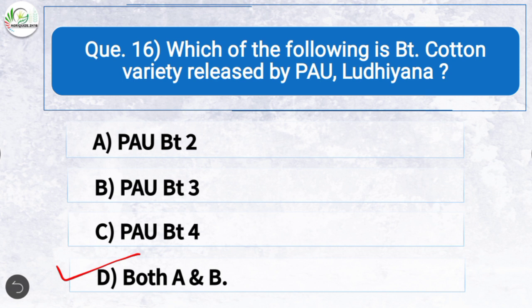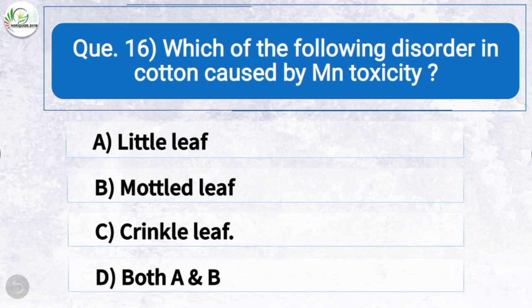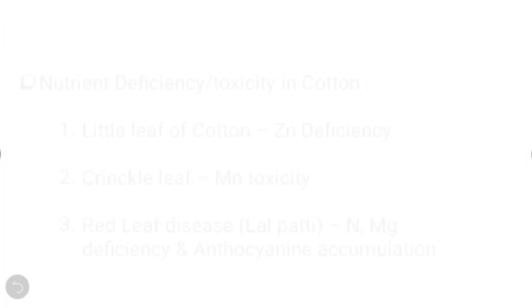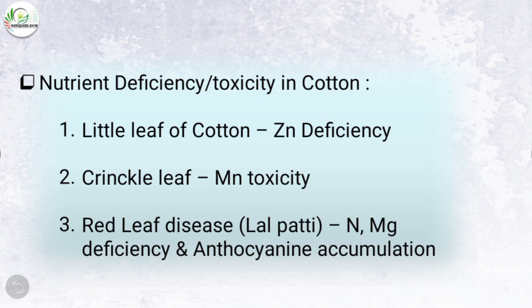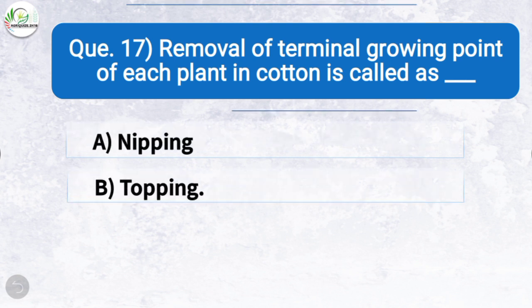Question seventeen (nutrient part): Which disorder in cotton is caused by manganese toxicity? The correct answer is option C: crinkle leaf. In terms of nutrient deficiency or toxicity in cotton: little leaf of cotton is caused by zinc deficiency; crinkle leaf is caused by manganese toxicity; and red leaf disease (lal patti) is caused by nitrogen and magnesium deficiency and anthocyanin accumulation. Removal of the terminal growing point of each plant in cotton is called topping.